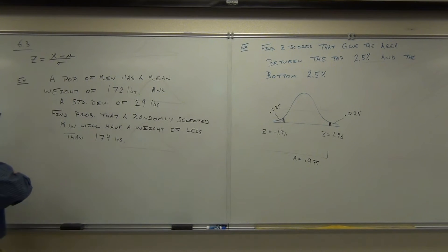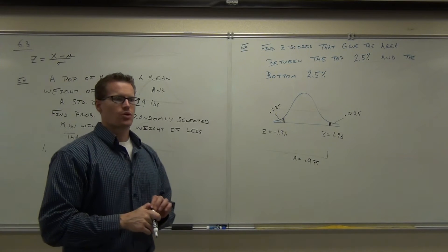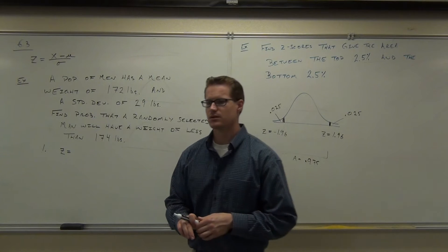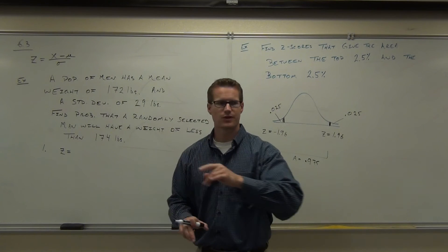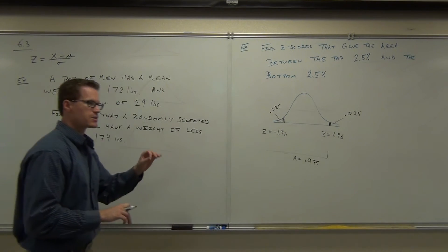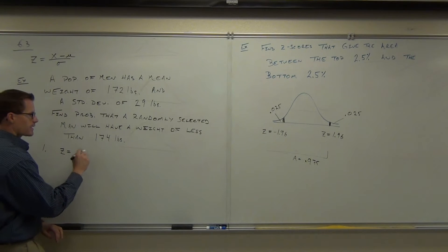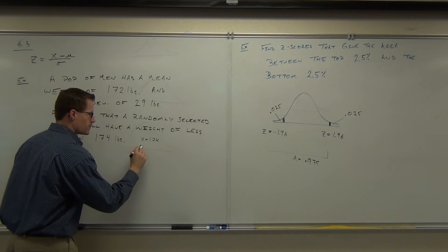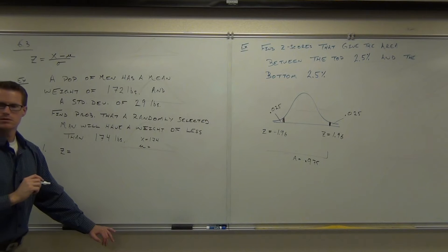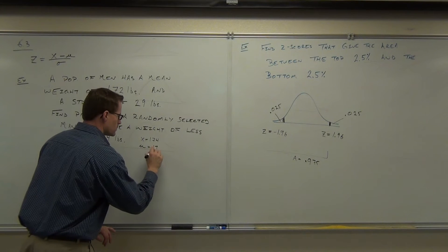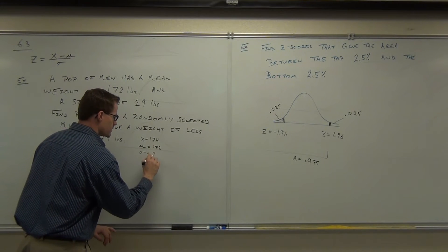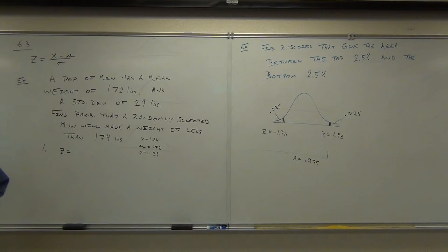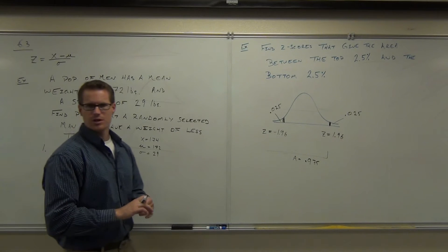For us, the first thing we're going to be doing is finding a z-score. What is your x value in this case? Good, x is the variable, that's what's changing here. The mean and the standard deviation will not change. In our case, the x is 174. The mean is 172, and the standard deviation is 29.